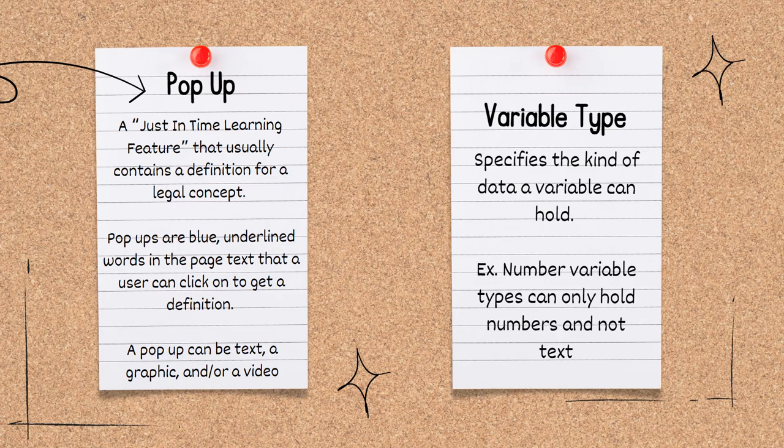Finally, a variable type specifies the kind of data a variable can hold. For example, number variable types can only hold numbers, and not text.